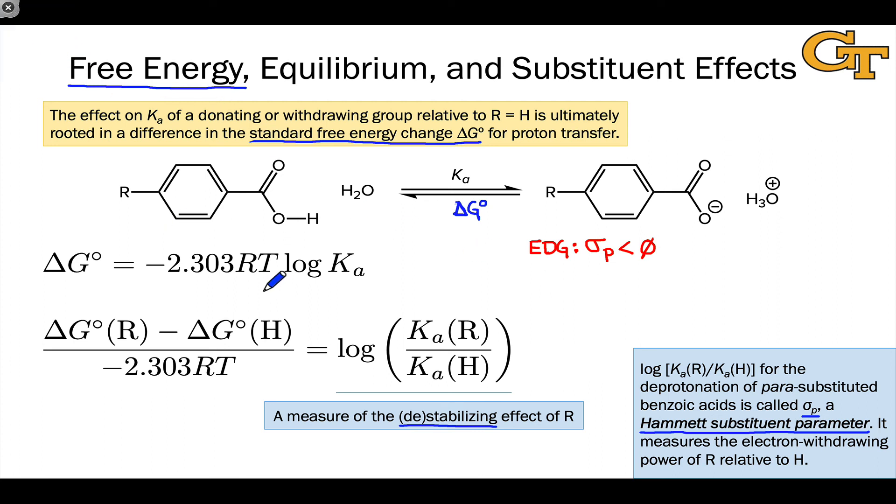On the other side of the coin, if we imagine R being an electron withdrawing group, well, that withdrawing group is going to stabilize the conjugate base, make the starting benzoic acid more acidic, make Ka for the para, say, cyano or carbonyl substituted benzoic acid greater than the Ka for benzoic acid itself. That's going to make sigma p greater than zero. And this, again, is one way to define an electron-withdrawing group. Any group that makes sigma p greater than zero is electron-withdrawing.